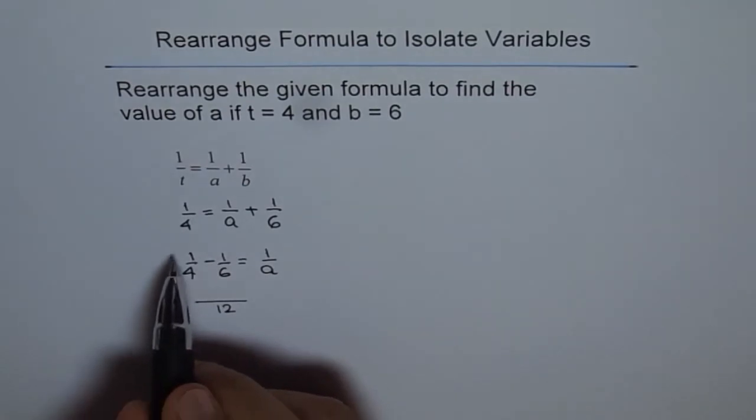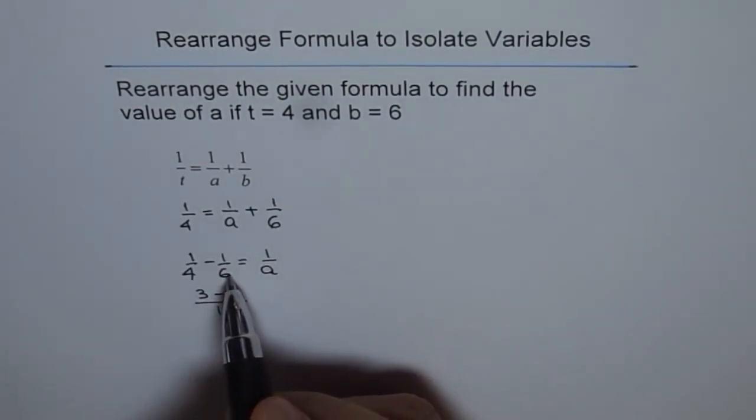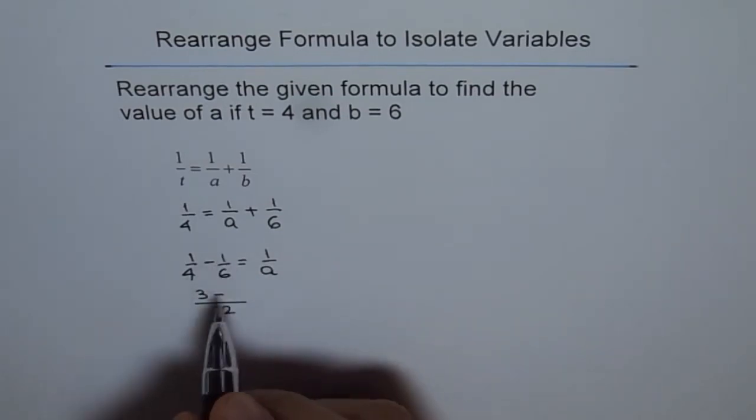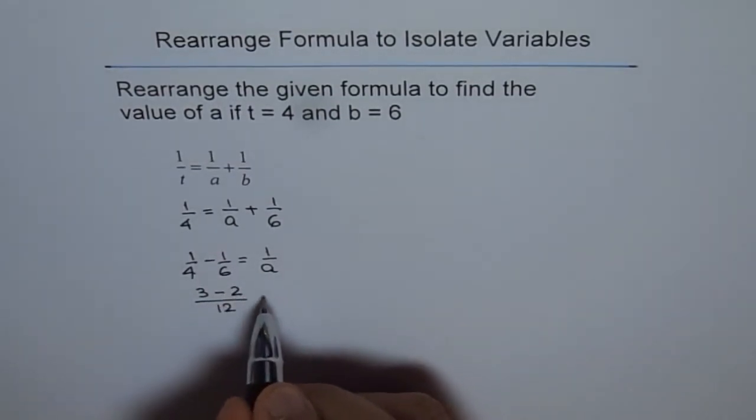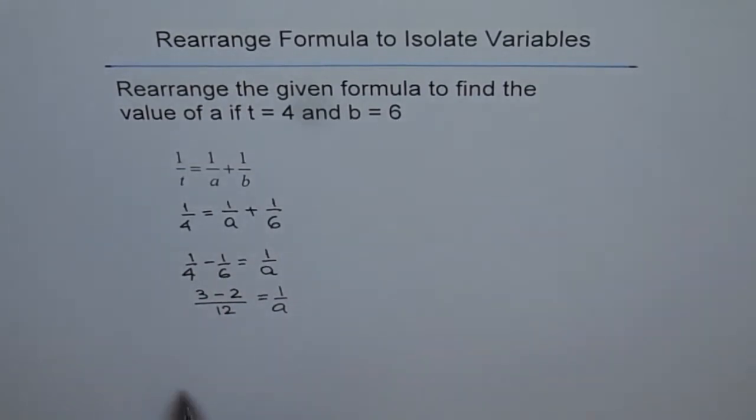So to get 12, we multiply both by 3, giving us 3 here, and 6 times 2 is 12, so we multiply by 2, giving us 2 there. 1 over A equals 3 minus 2 over 12.